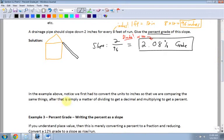Now, in the example above, we had to first convert the units to inches, so that we were comparing the same things. Otherwise, we would be comparing inches to feet, doesn't make any sense. After that, it's simply a matter of dividing to get the decimal, and then multiplying by 100 to get the percent.